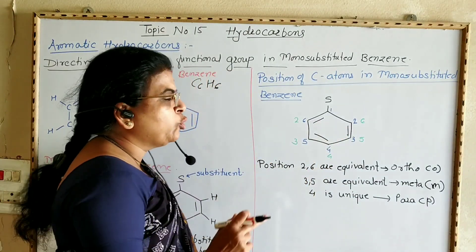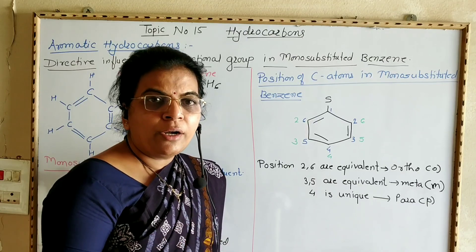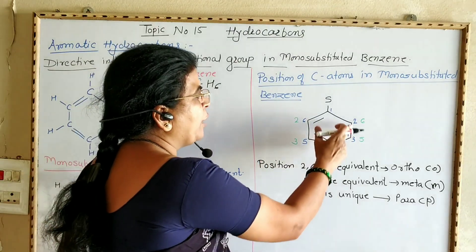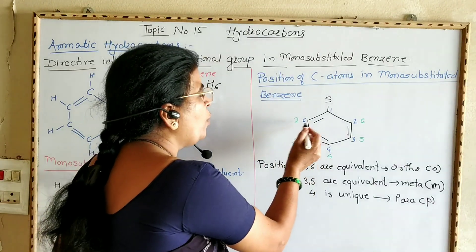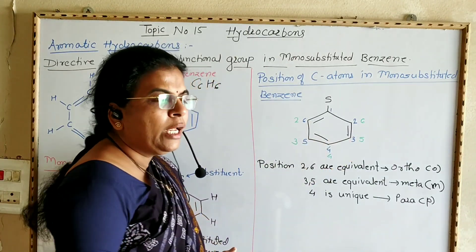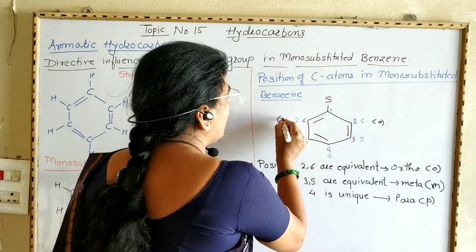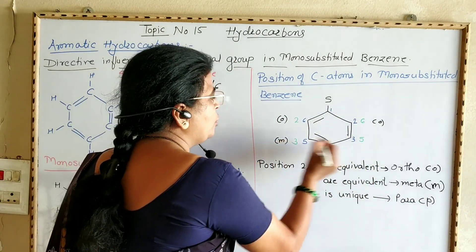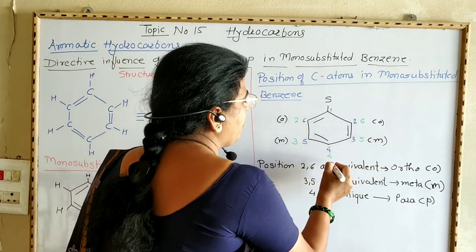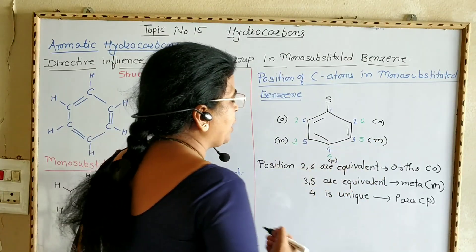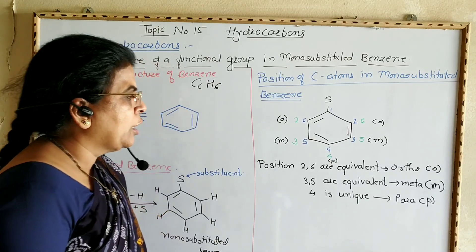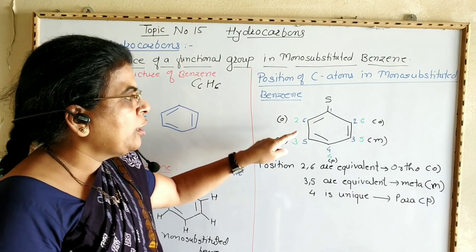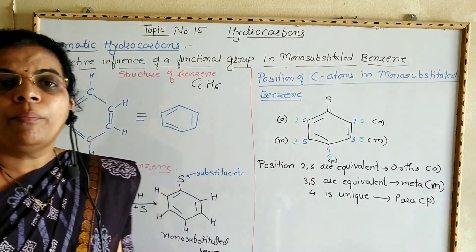Monosubstituted benzene can undergo electrophilic substitution reaction at these five positions. Since 2 and 6 are equivalent ortho positions, and 3 and 5 are equivalent meta positions, and 4 is the para position, monosubstituted benzene effectively has three distinct positions: ortho, meta, and para.